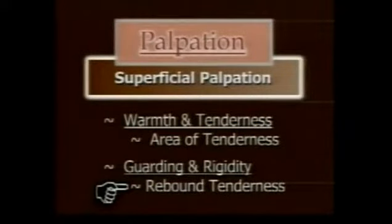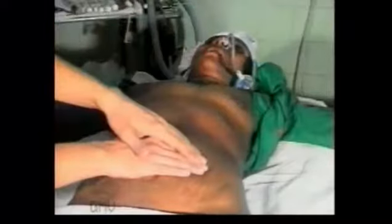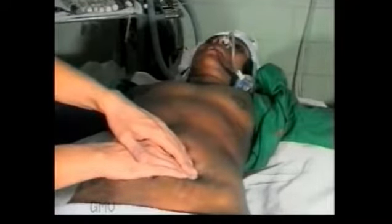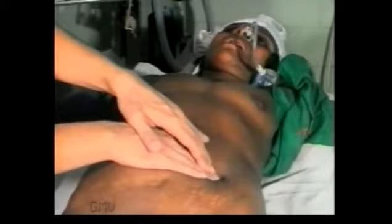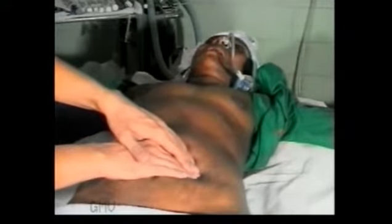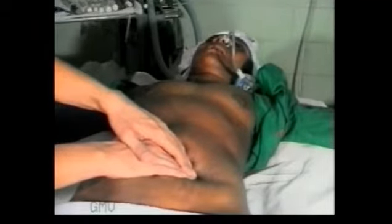If there is mild localized tenderness, look for rebound tenderness. Palpate the tender area with a flat hand and slowly press down, pressing deeper with each expiration. Now withdraw the hand suddenly. If the patient gets acute pain on withdrawal, it is termed as rebound tenderness — it indicates inflammation of the parietal peritoneum due to an underlying inflamed organ. Note the acute pain on withdrawal of the palpating hand. In presence of intestinal obstruction, rebound tenderness suggests strangulation.